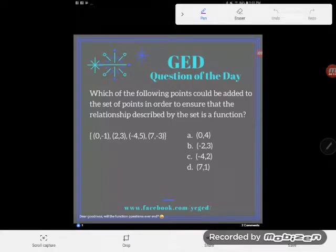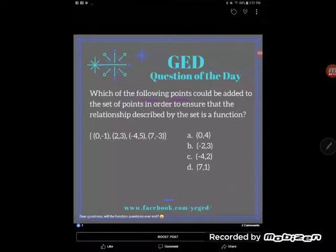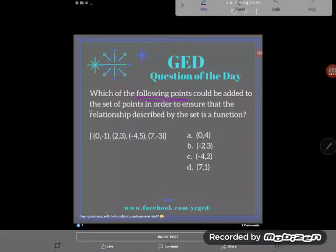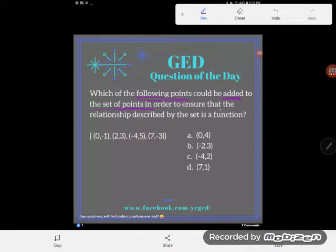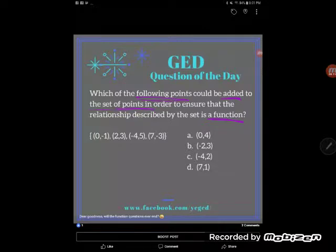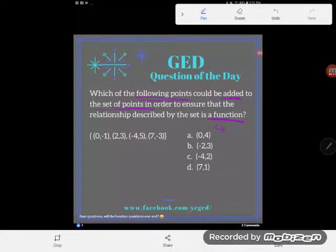So another function question for our question of the day. Take a look here. Which of the following points could be added to the set of points in order to ensure that the relationship described by the set is a function?